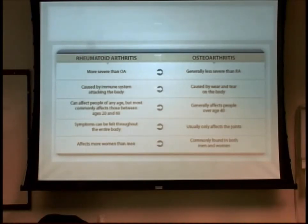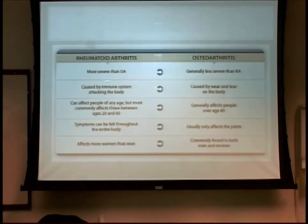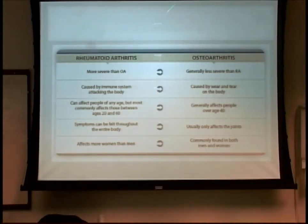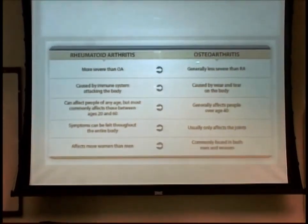It used to be that RA was the crippling arthritis and osteoarthritis was the regular one. Since we treat RA so well now, I'm not sure osteoarthritis isn't now the more crippling one. Thirty years ago, 35% of RA patients were crippled regardless of treatment. Today RA patients do well with biologics, while osteoarthritis patients are getting joint replacements all the time.